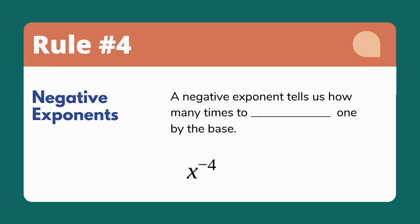Rule number four says a negative exponent tells us how many times to divide one by the base. So that means x to the negative fourth from our previous example becomes one divided by x to the positive fourth. We are dividing by x four times.